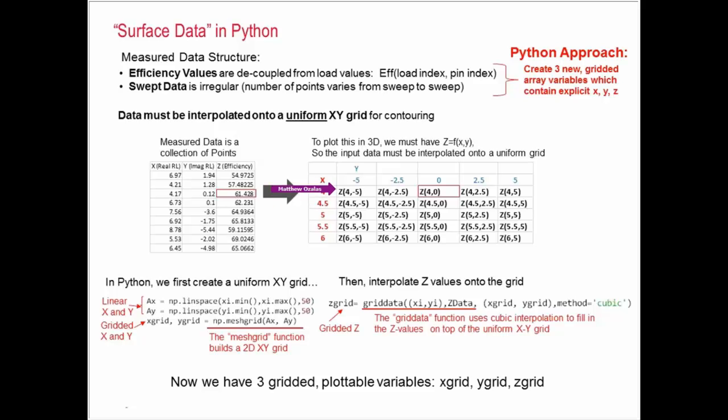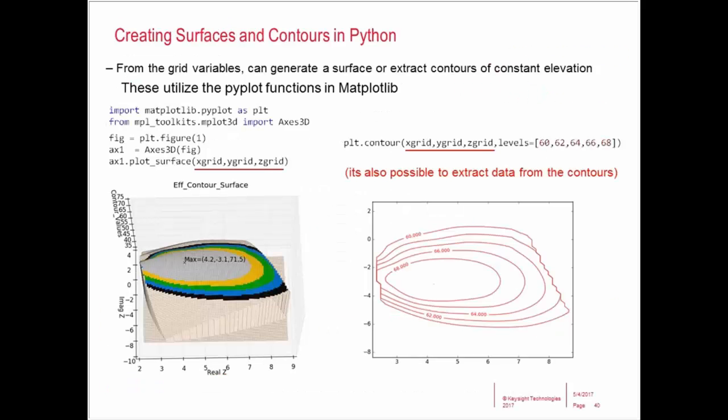If I was doing this from scratch, I don't know where I'd even begin. It's difficult to think about. But in Python, the beauty is we've already got functions there to do that. Here I create a uniform X and Y grid, and then I use this mesh grid function. That automatically builds the right 2D XY grid that I need based on the inputs. For the Z value, we really need to interpolate that data onto this uniform grid, because we only have scattered points in different places. This grid data function in Python does exactly that. It uses cubic interpolation to put the Z values onto that uniform XY grid that I created. So now, pretty easily from this data, I've got 3 gridded plottable variables: X, Y, and Z.